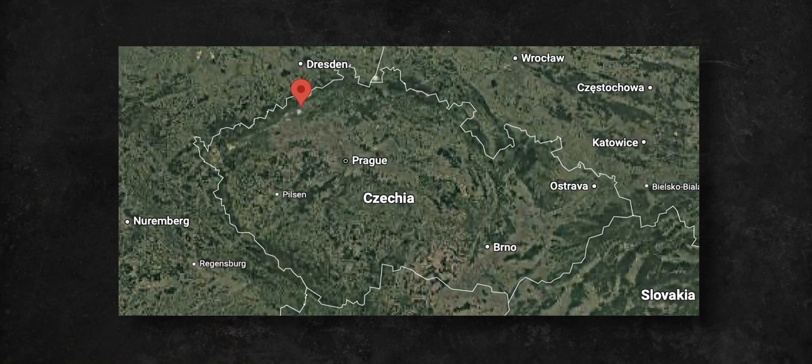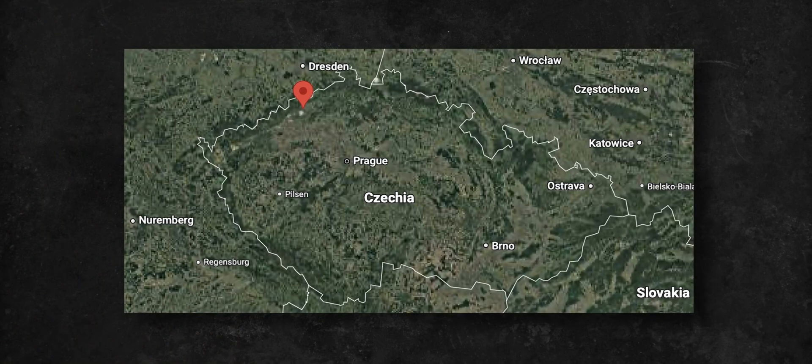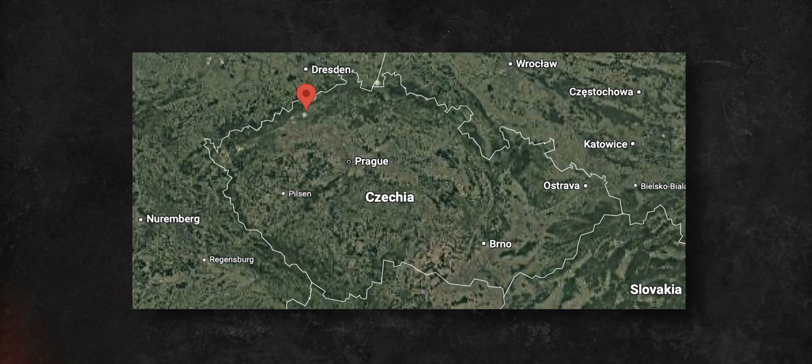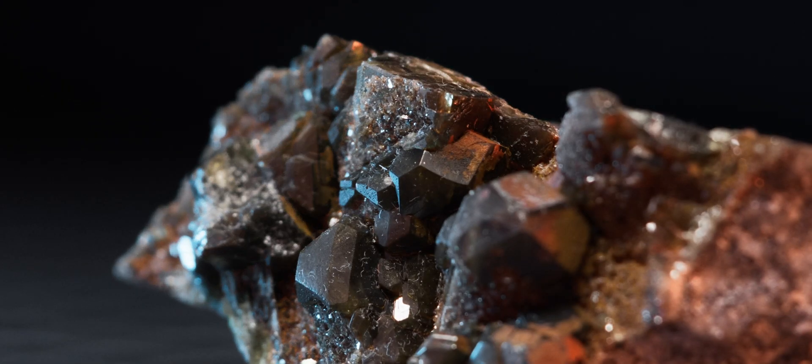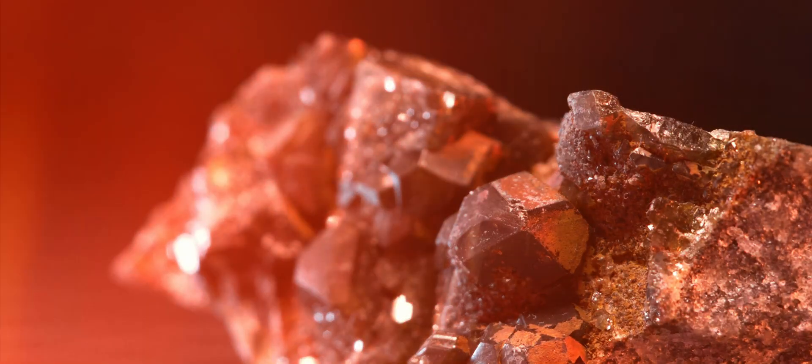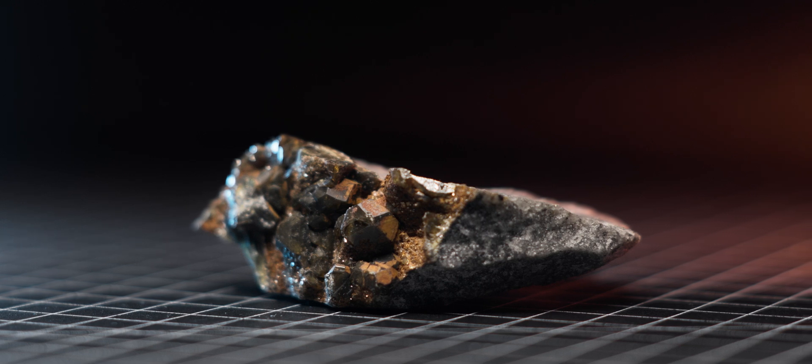My sample of radiobaryte comes from Jáchymov in Czech Republic, a region known for its high-grade uranium deposits. The sample has beautiful large brown crystals, which do not fluoresce under black light and are formed on top of quartzite matrix.